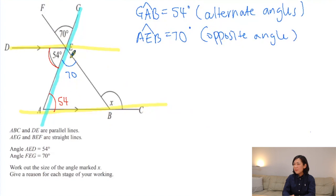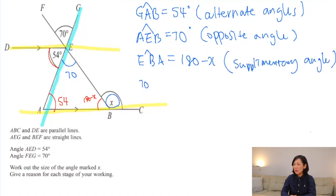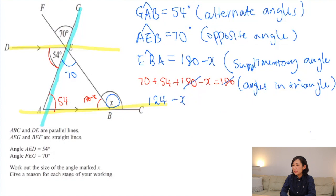We can find x using the triangle. One of the angles we can write as 180 minus x using the supplementary angle — angle EBA equals 180 minus x because it's a supplementary angle. Adding all three angles: 70 plus 54 plus (180 minus x) equals 180, because all interior angles of a triangle add up to 180. Simplifying, 124 minus x equals 0, so x equals 124.